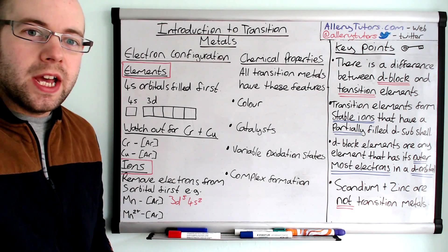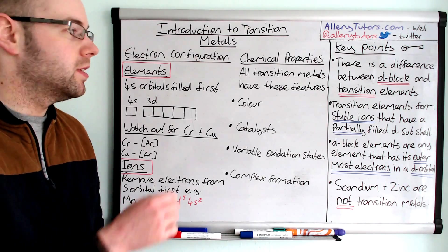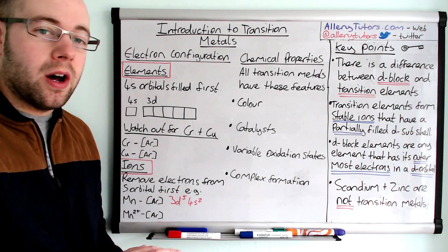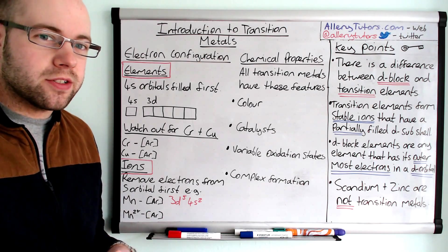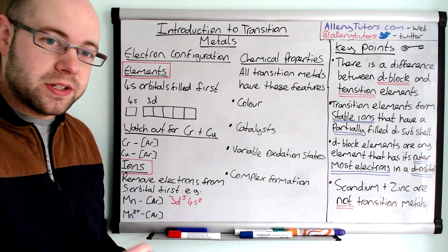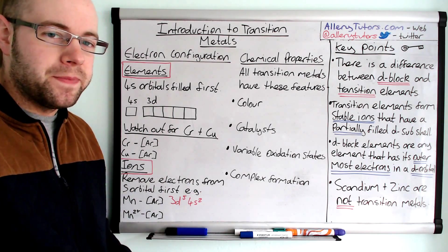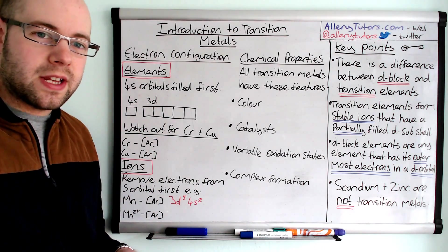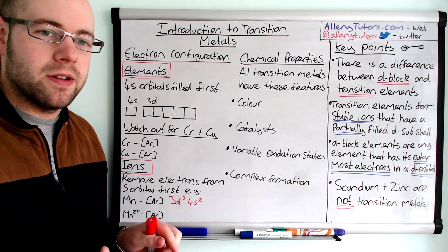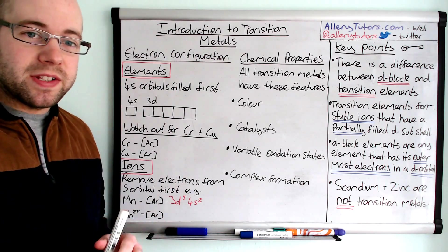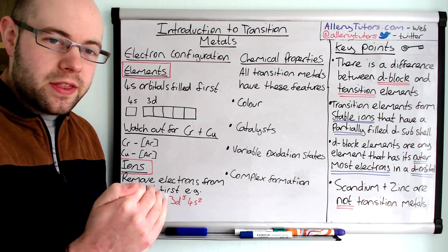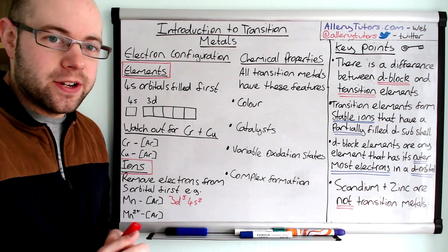If we come on to electron configurations. Now, electron configurations of elemental transition metals, they always have electrons in the 4s orbital. And some of them are full, so they have two electrons in there. And some of them are not, which we'll come on to in a minute as well. The 4s and 3d orbitals are actually really close together in terms of energy. And that's why we've got the word transition there as well, because the electrons can move relatively easily between the 4s and the 3d orbitals. And these orbitals can change in terms of energy levels as well.